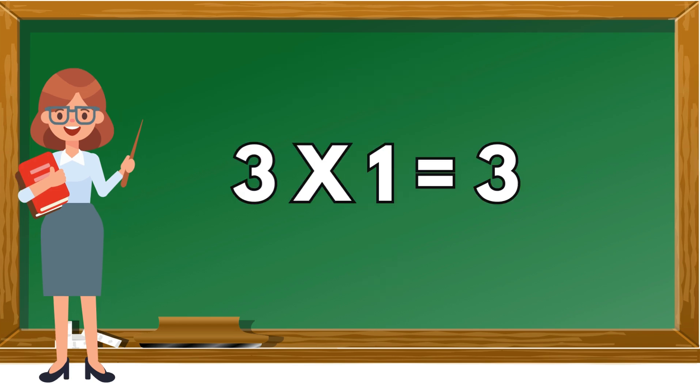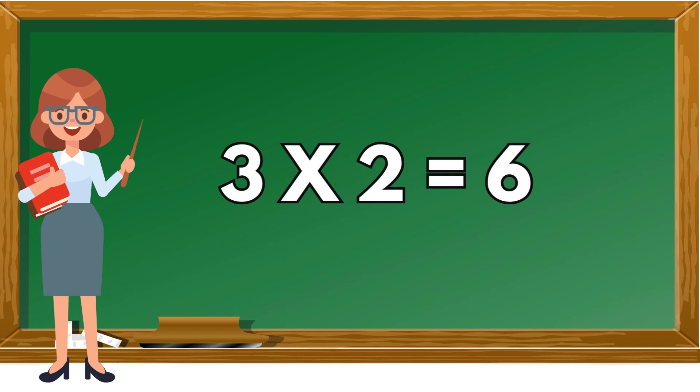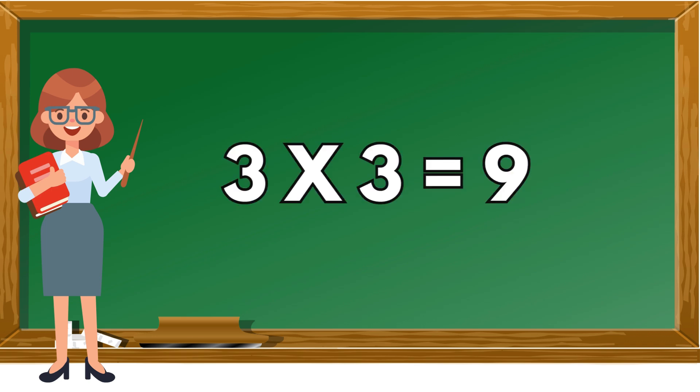Three ones are three. Three ones are three. Three twos are six. Three twos are six. Three threes are nine. Three threes are nine.